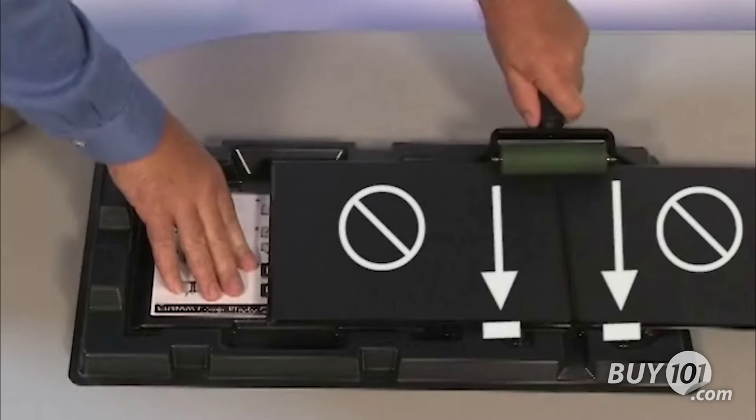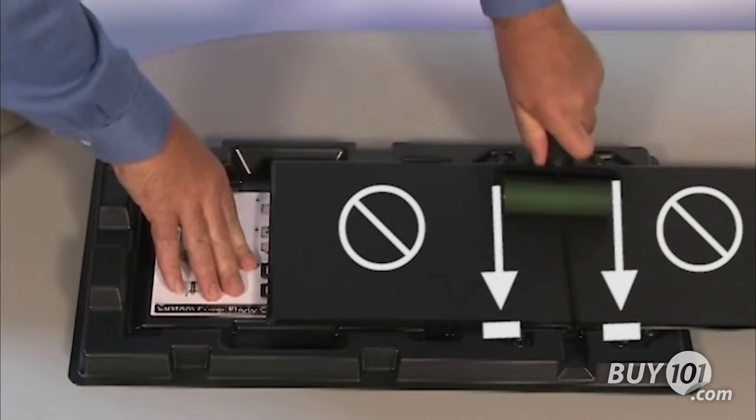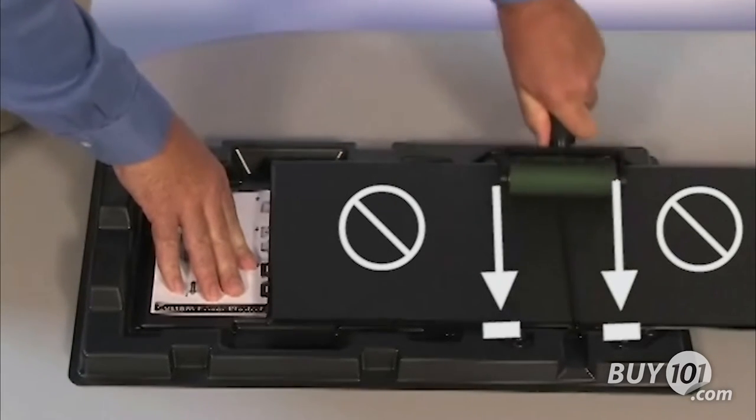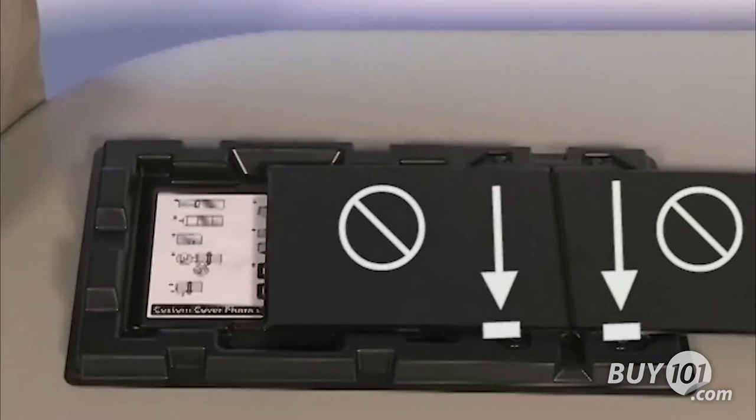Using the four inch roller, roll over the inside of the spine area only, pressing firmly. Do not roll over the outer edges of the cover. Doing so might bend the cover.